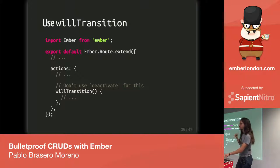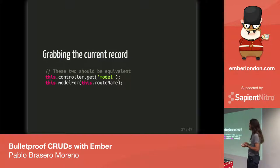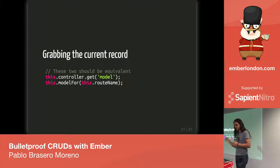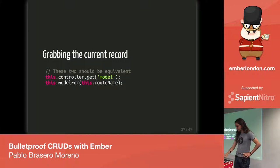Now that we know which hook to use, we need to grab the existing record. These seem to be the two accepted ways of doing this: you either go through the controller and get the model, or you use modelFor feeding it the current route name. The way I started doing this when I first began with Ember was like this — because I didn't know better.